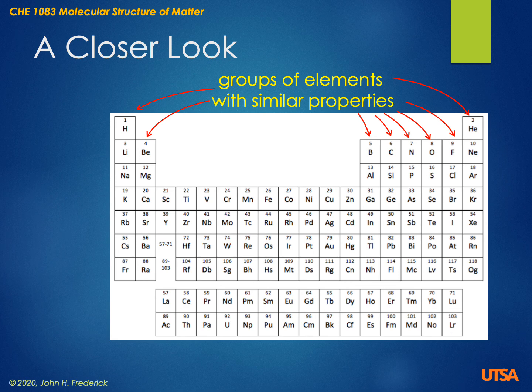On the far left-hand side, we have hydrogen, then lithium, sodium, potassium, and then the larger ones: rubidium, cesium, and francium — though we probably won't talk about those much in this course. On the right-hand side, we have helium, neon, argon, krypton, xenon, and radon. They all share the chemical similarity that none of them form compounds — they are all totally inert.